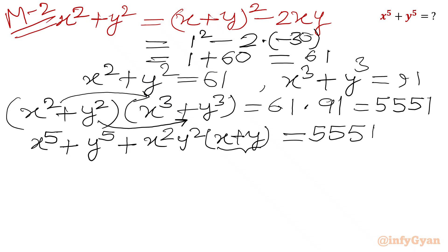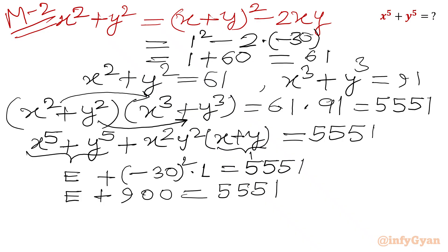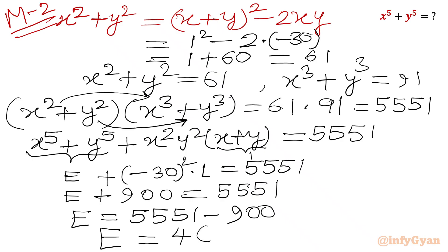Since x + y = 1 and xy = −30, we have x²y² = (xy)² = (−30)² = 900. So E + 900 × 1 = 5551, giving E + 900 = 5551. Subtracting 900 from both sides: E = 4651. This confirms our final answer.